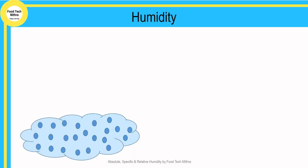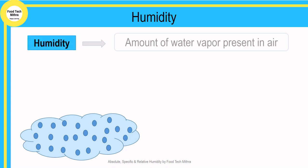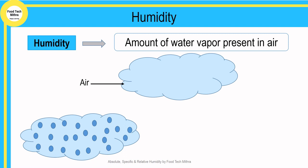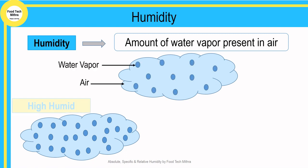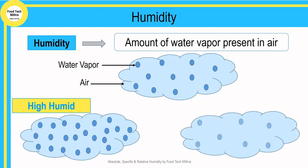We know that water exists in three different states of matter, and we call it water vapor when it is in the gaseous state. Humidity is a very general term and it is the amount of water vapor present in air. If you take a sample of air it holds some amount of moisture or water vapor in it. We call a condition high humid when the air holds more amount of moisture or water vapor, and when it holds less water vapor the condition is called low humid.